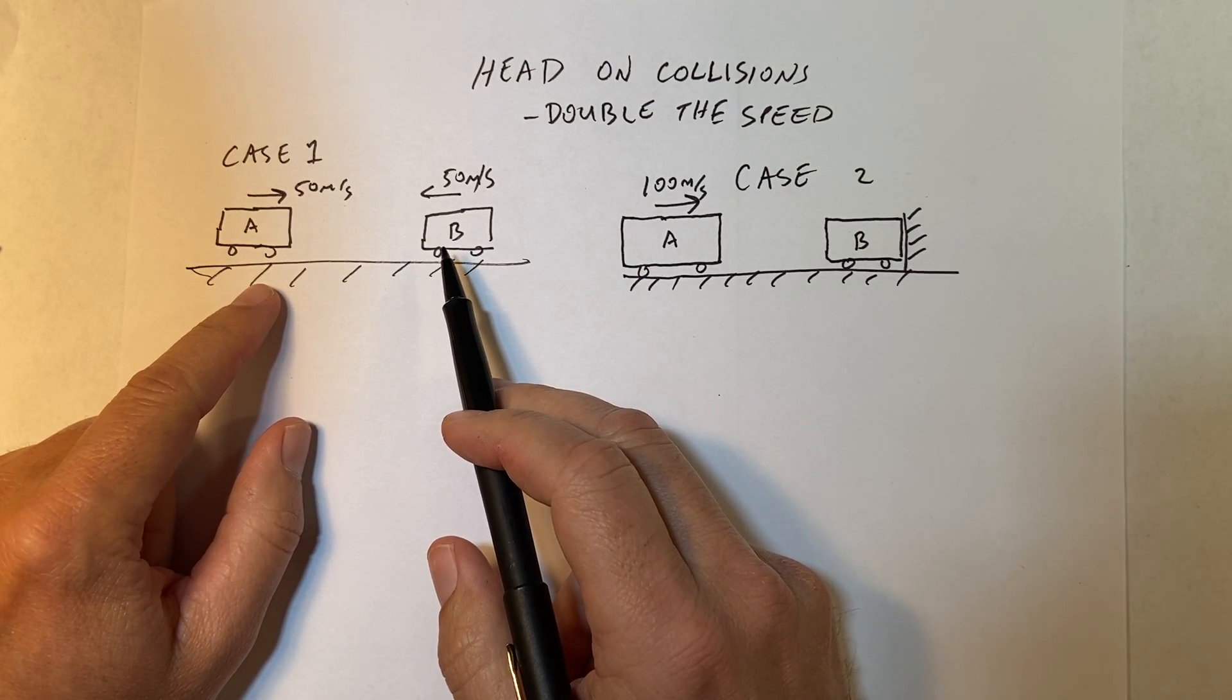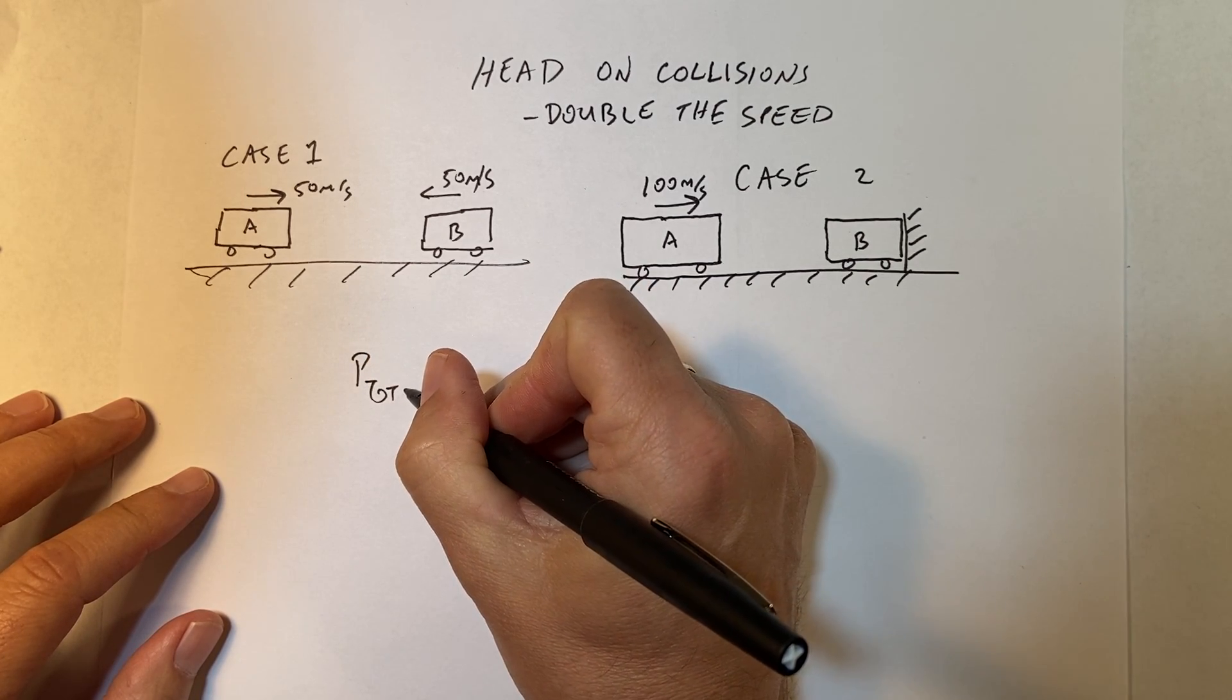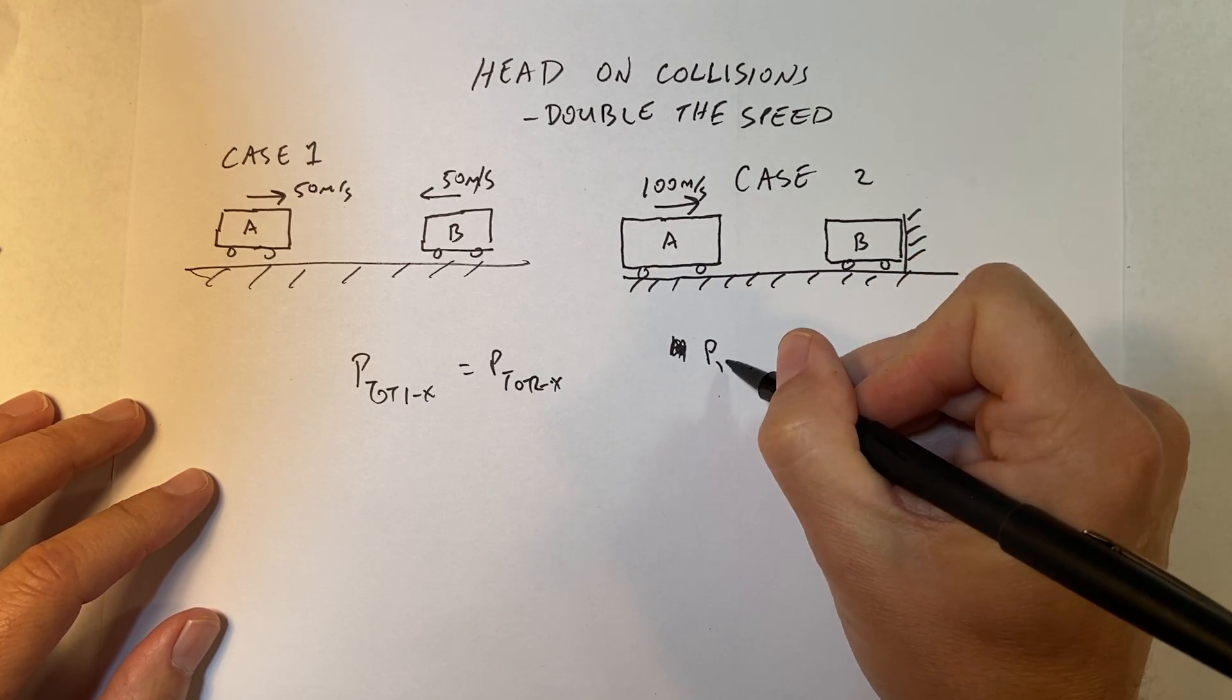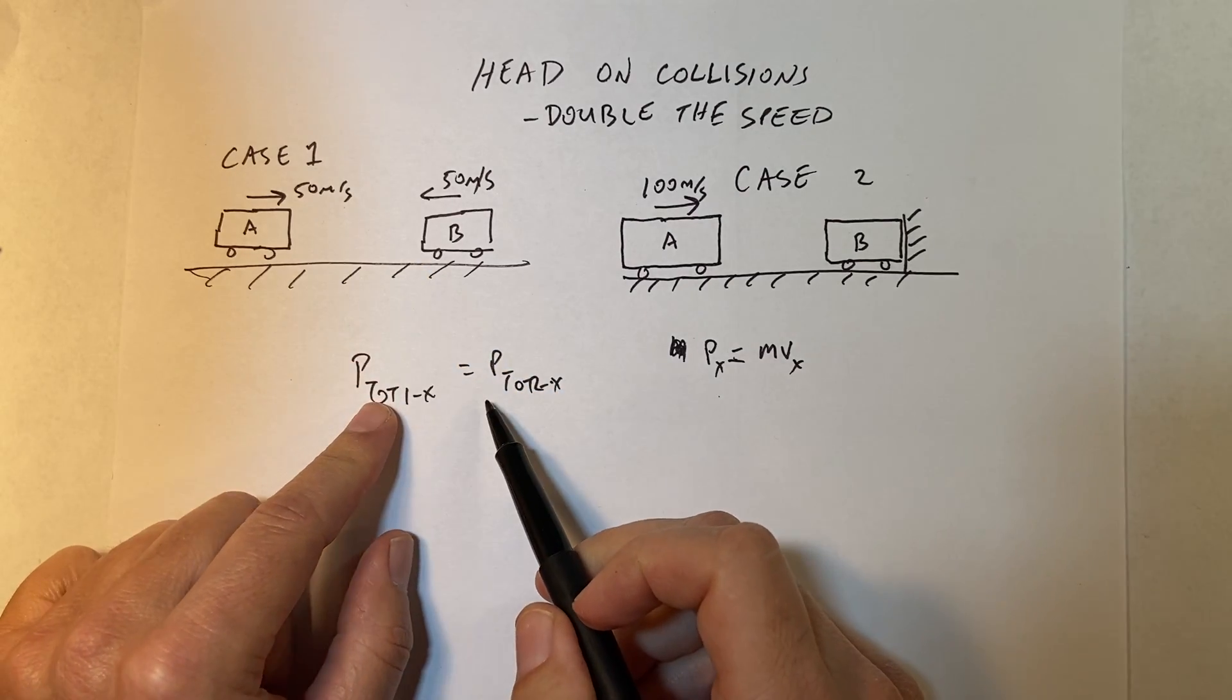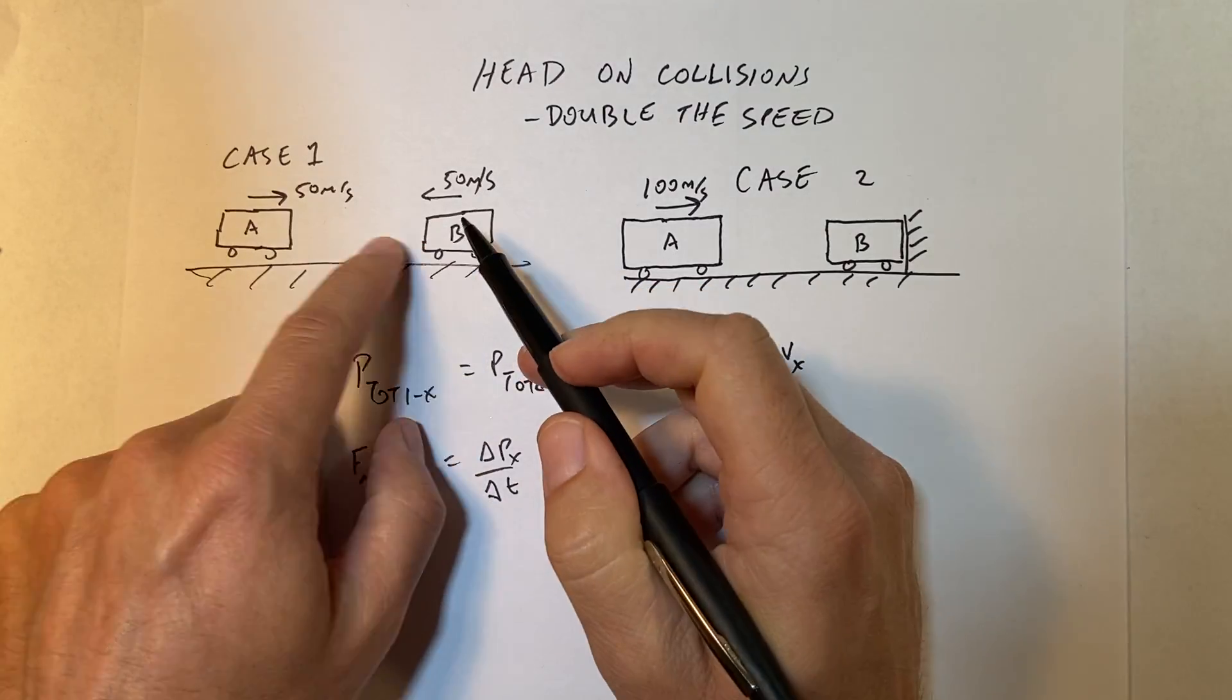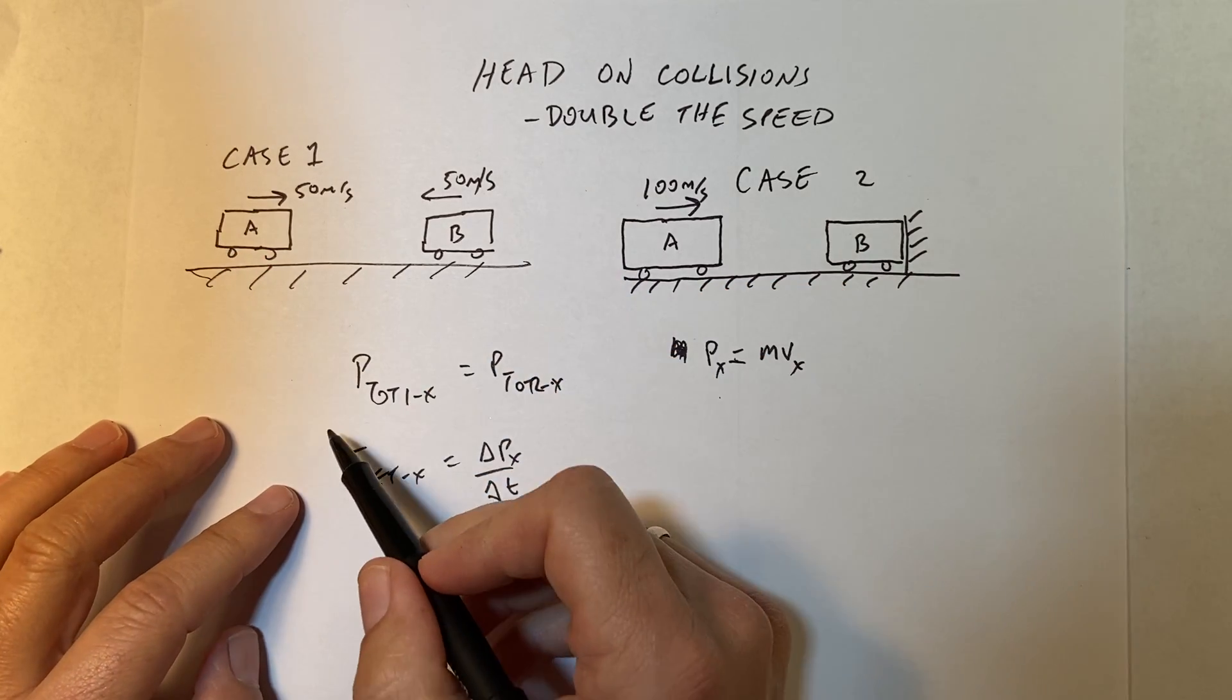Let's start with this case. Both cases we're going to consider a completely inelastic collision. So in a collision, there's two things that we need to deal with. I can say the total momentum before in the x direction is the total momentum afterwards in the x direction. Momentum in the x direction is mass times velocity in the x direction. We're dealing with a one-dimensional problem here, so I'm not going to use vectors. This comes from the idea that the momentum principle says F net x is a change in momentum in the x direction over the change in time.